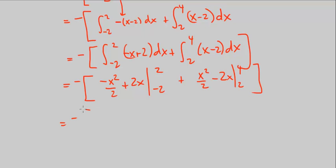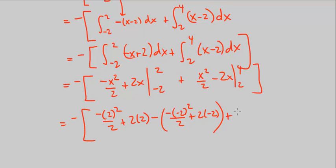I can go ahead and plug in 2, so it's going to be negative 2 squared over 2 plus 2 times 2, minus and plug in negative 2, negative of negative 2 squared over 2 plus 2 times negative 2. That's just this, plus and evaluate this one at 4, 4 squared over 2 minus 2 times 4, minus evaluated at 2, 2 squared over 2 minus 2 times 2, closing that bracket.